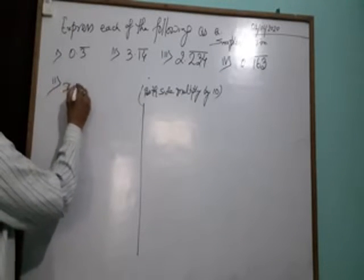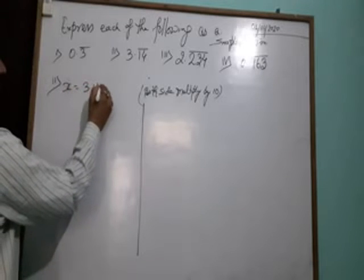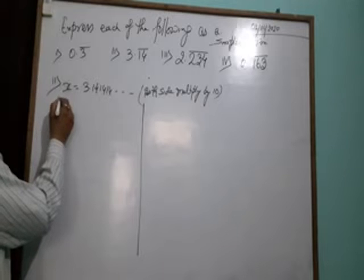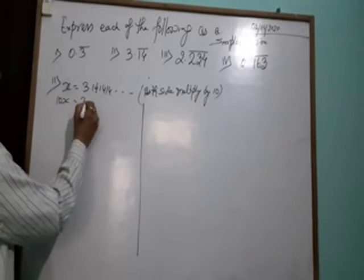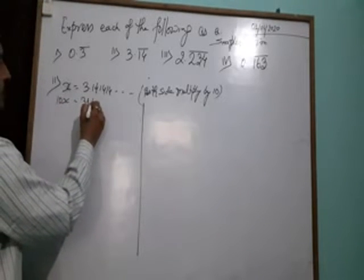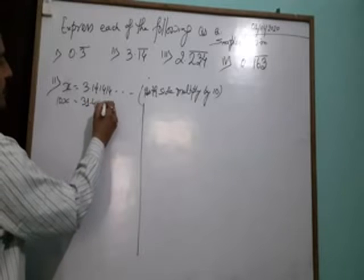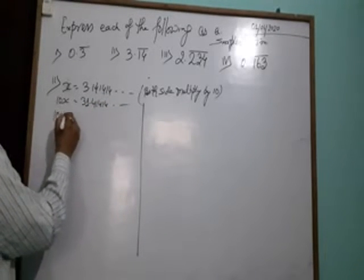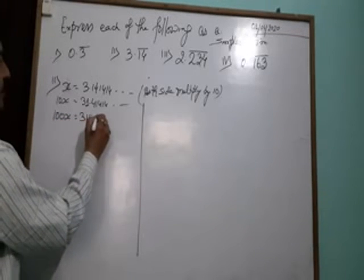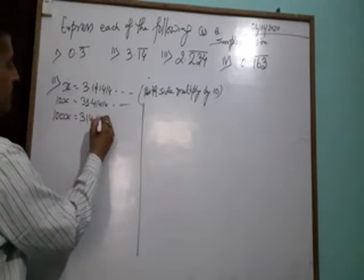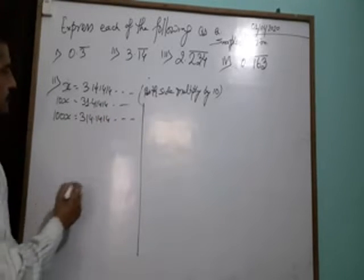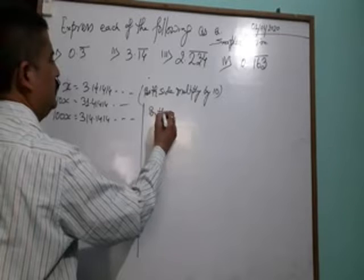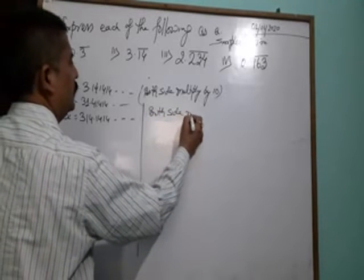Next, X equals 3.141414 and so on. Multiply by 10X equals 31.4141. Again, multiply by 100X equals 314.1414 and so on.